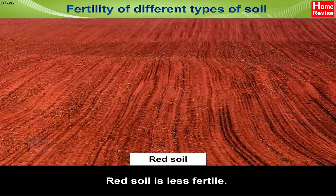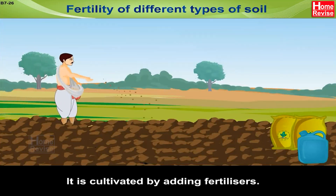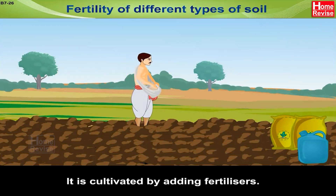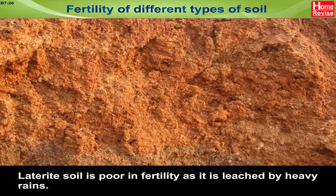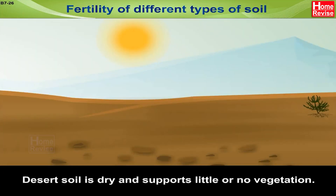Red soil is less fertile. It is cultivated by adding fertilizers. Laterite soil is poor in fertility as it is leached by heavy rains. Desert soil is dry and supports little or no vegetation.